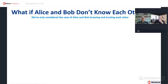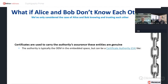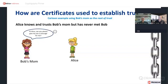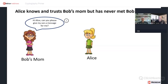What if Alice and Bob don't know each other? We've only considered the case where Alice and Bob know and trust each other. If they are strangers, they must establish a chain of trust in which they share a common trusted authority — known as a trust anchor or root of trust. This trusted authority will vouch for Alice to Bob and also vouch for Bob to Alice. Certificates are used to carry the authority's assurance that these entities are genuine. The authority is typically the OEM in the embedded space, but it can be a certificate authority like Symantec, GoDaddy, DigiCert, etc.